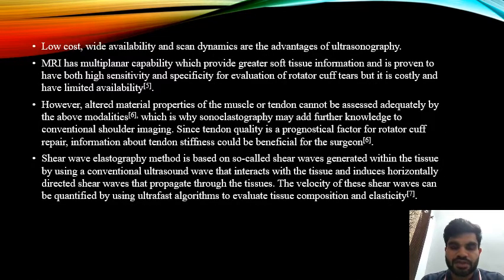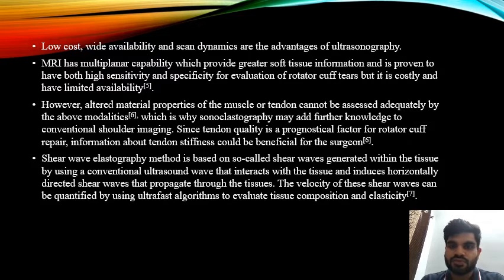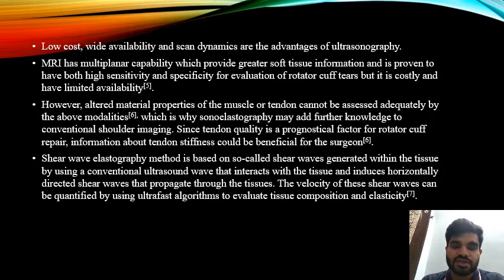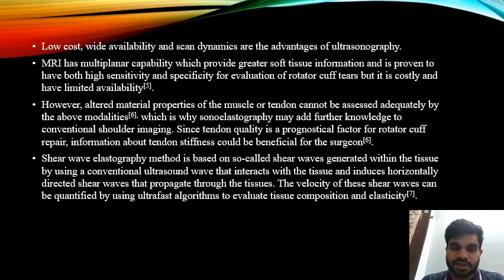Low cost, wide availability and scan dynamics are the advantages of ultrasonography. MRI has multiplanar capability which provides greater soft tissue information and is proven to have both high sensitivity and specificity for evaluation of rotator cuff tears, but it is costly and has limited availability. However, altered material properties of the muscle or tendon cannot be assessed adequately by the above modalities, which is why sonoelastography may add further knowledge to conventional shoulder imaging.